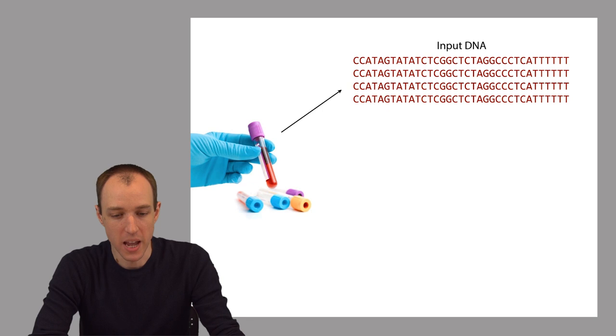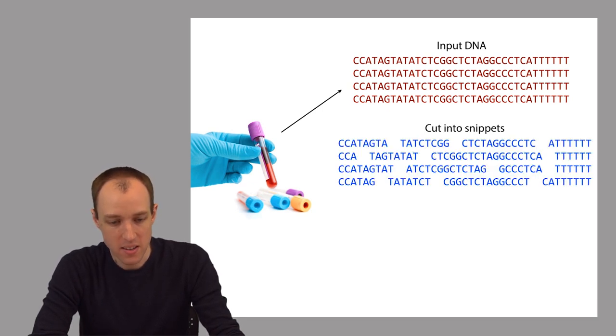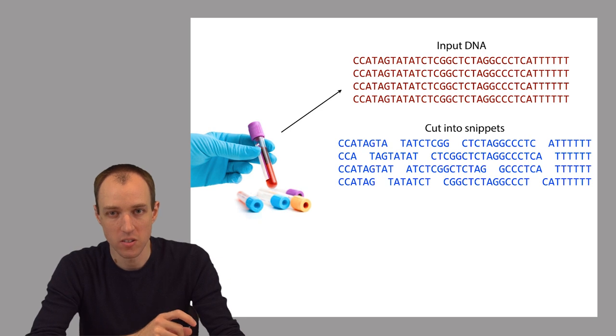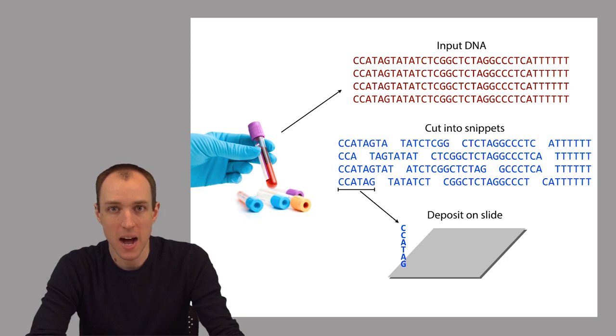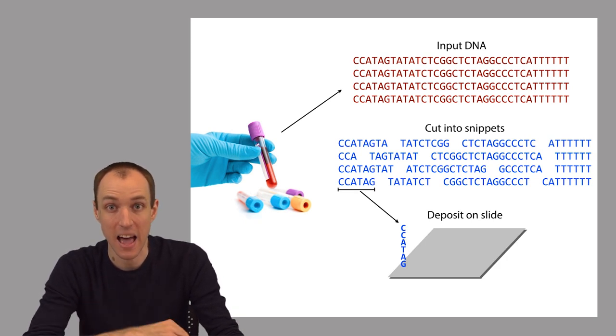In the laboratory we can extract that DNA, and then we can chop it up into little snippets. We can also make that DNA single-stranded, so we can turn it into short single-stranded templates. Then finally we can take those short single-stranded templates and deposit them onto some sort of flat surface, like a slide.